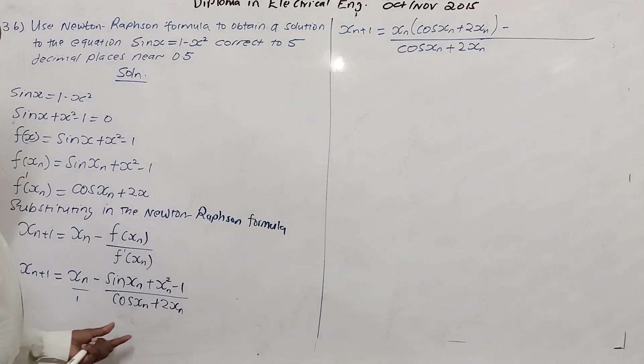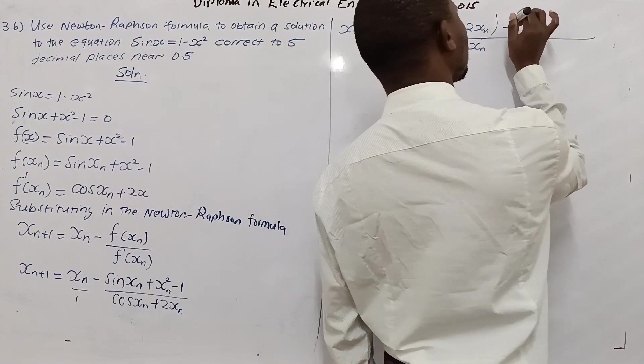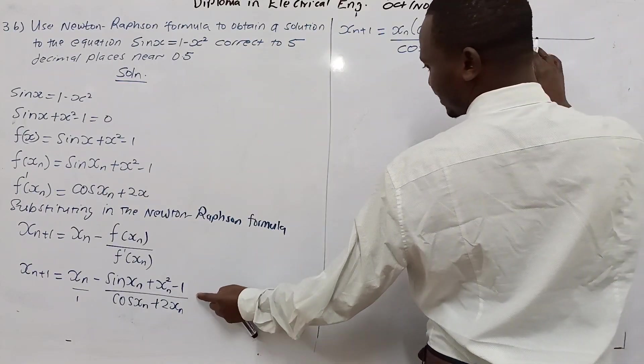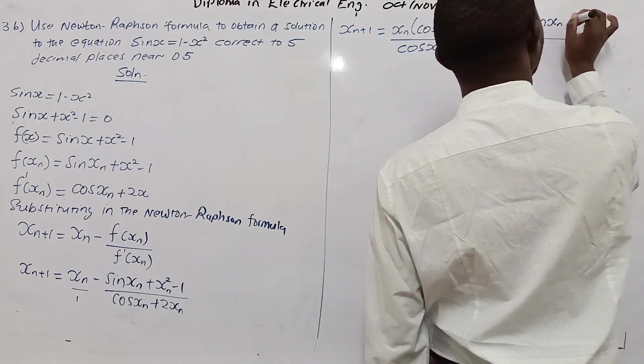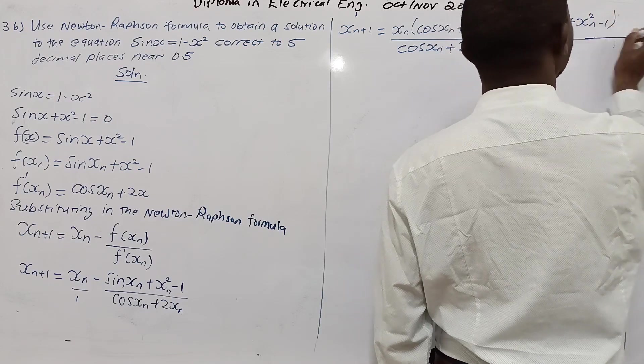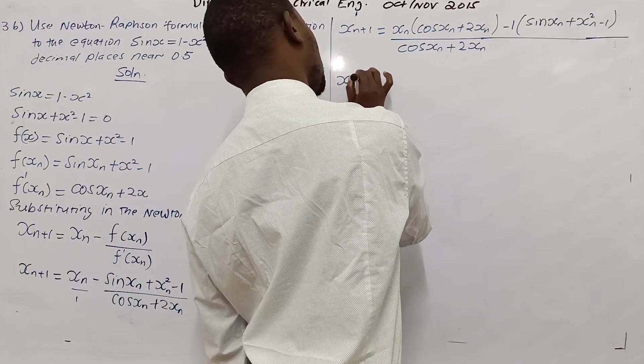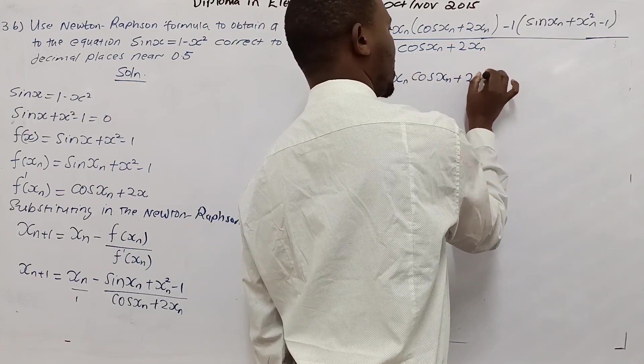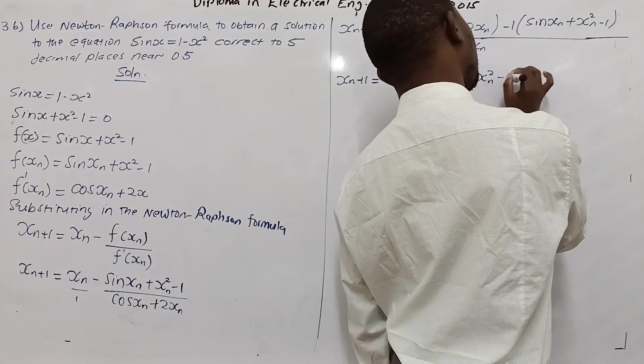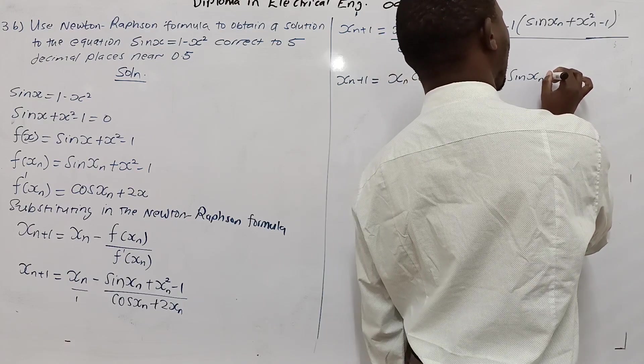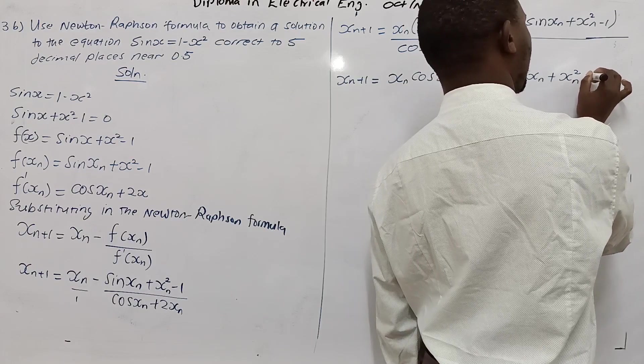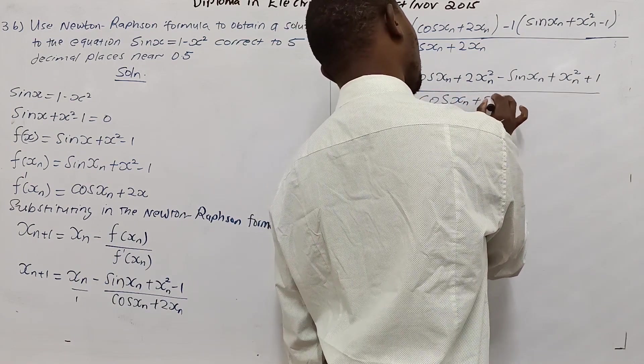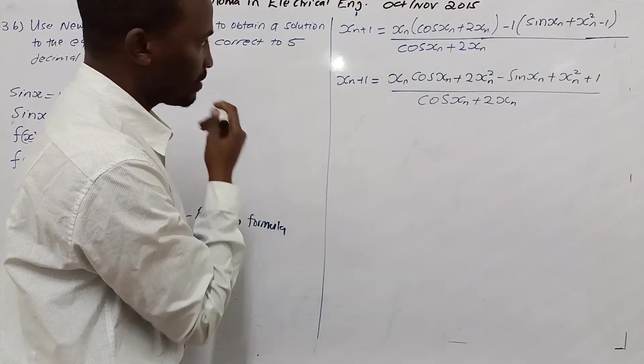Cos xn plus 2xn minus cos xn plus 2xn divided by cos xn plus 2xn, which is 1. Open that bracket. There is a bracket here. The numerator you have the same xn plus xn squared minus 1. So let us open the bracket.